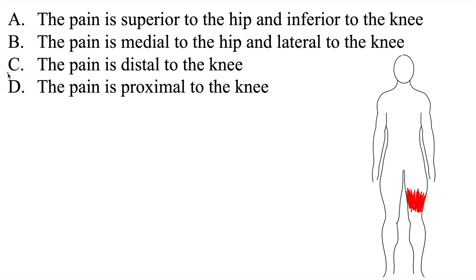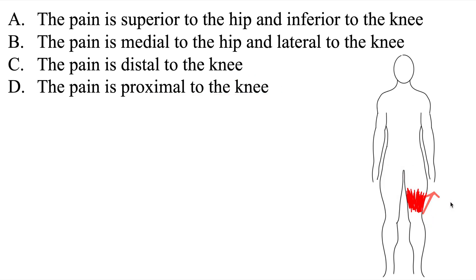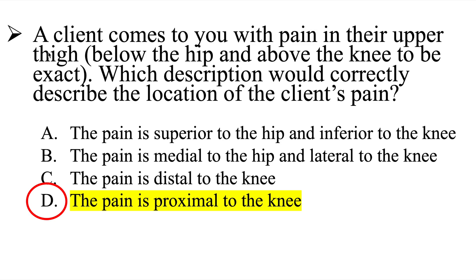So D is our answer. One more time: a client comes to you with pain in the upper thigh, below the hip and above the knee. The answer is D — the pain is proximal to the knee. I hope this question helped you. If you need any help with any of the anatomical terms we went over, there will be a link up here — I would encourage you to click on it.